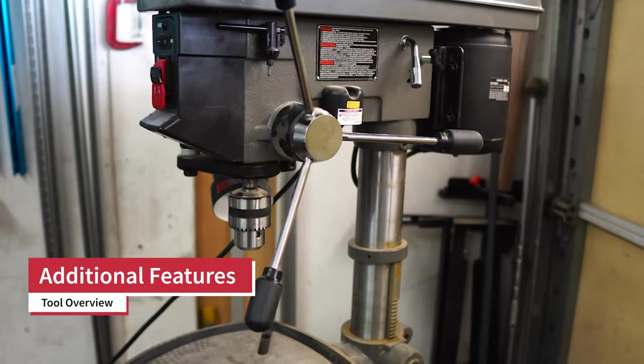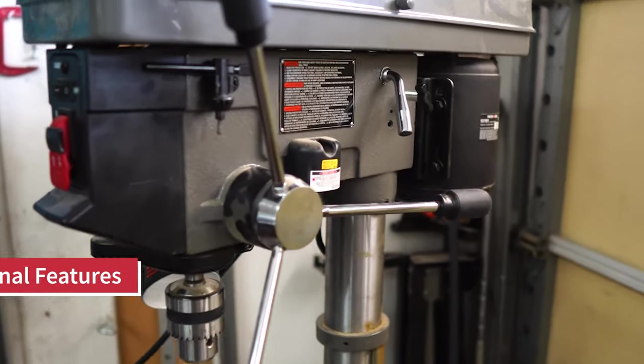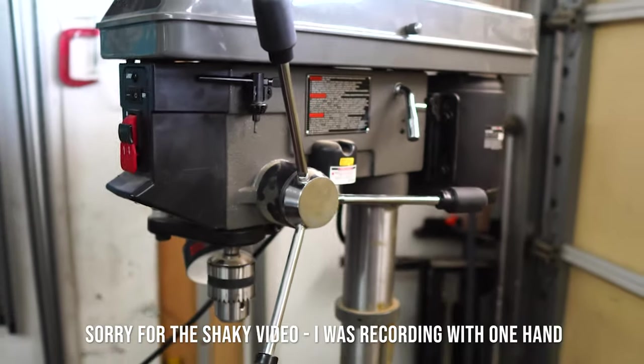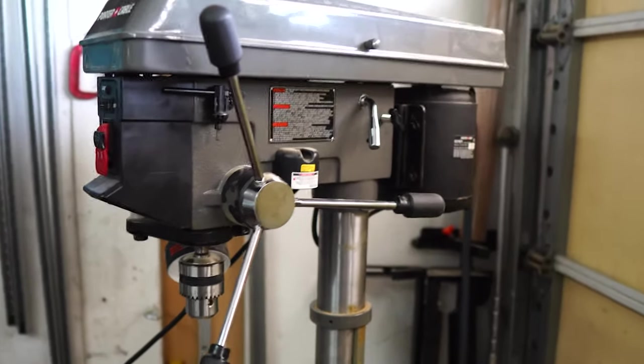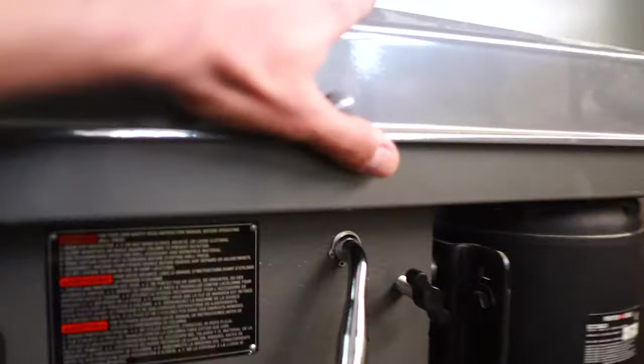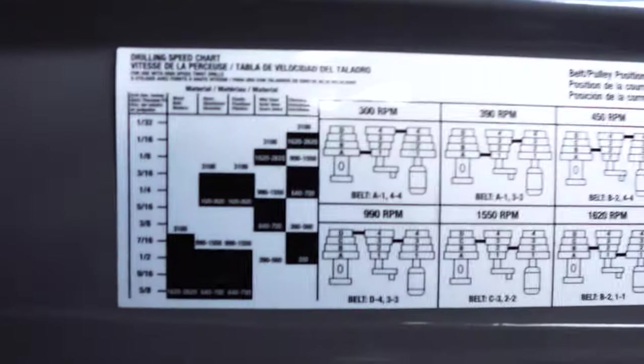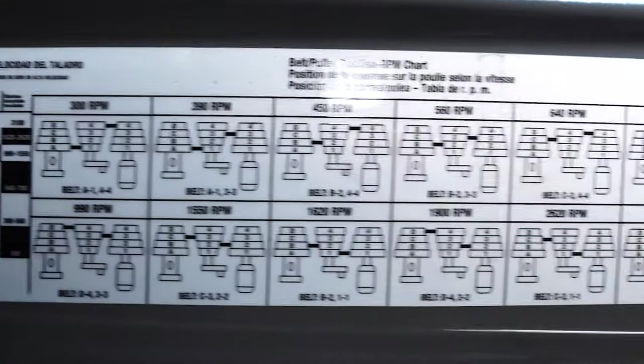Let's go over some of the features of the Porter Cable Drill Press. The first thing I want to show you is adjusting the speed and RPM. Obviously you want to use the higher RPMs for wood and lower RPMs for metals or hard materials, so you simply pop this open. It gives you a little chart as a reference guide to tell you what RPM setting each of the belts should be at.